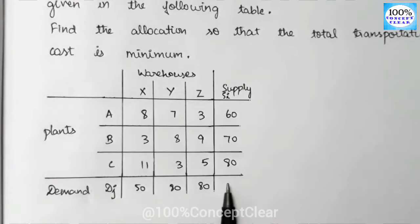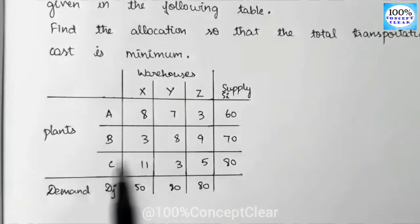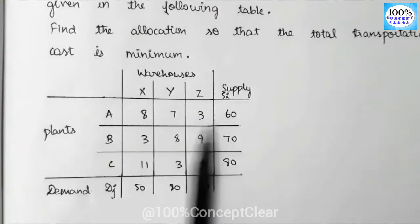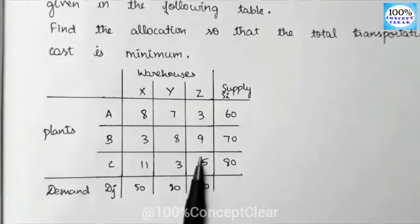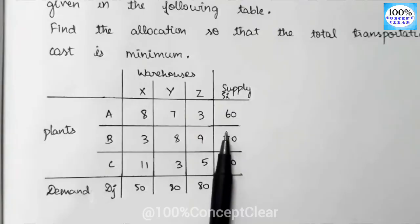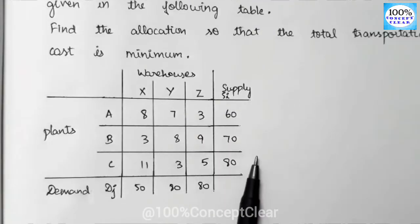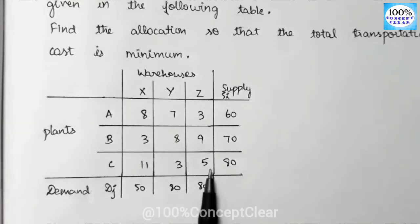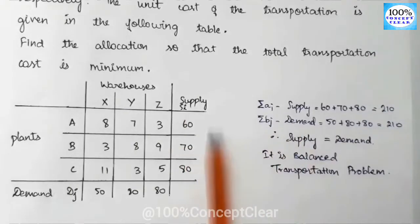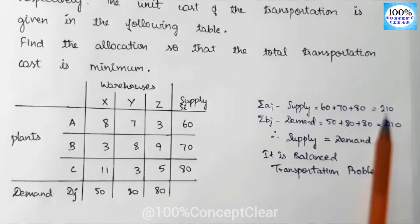Now we can solve the problem. The first step is to check whether the problem is balanced or unbalanced. We add supply: 60 plus 70 plus 80. The total supply is 210.